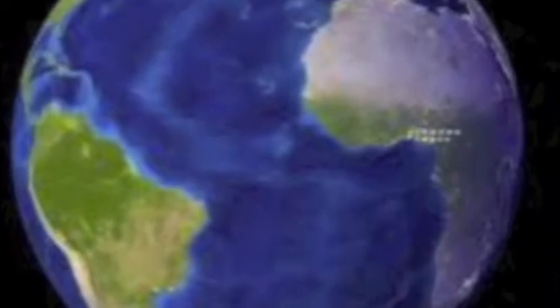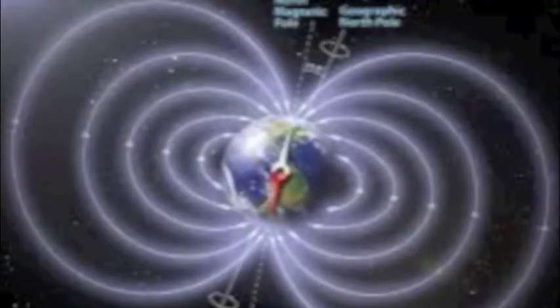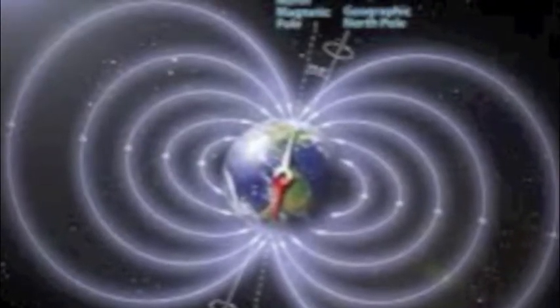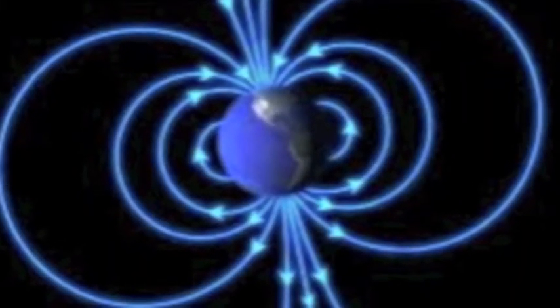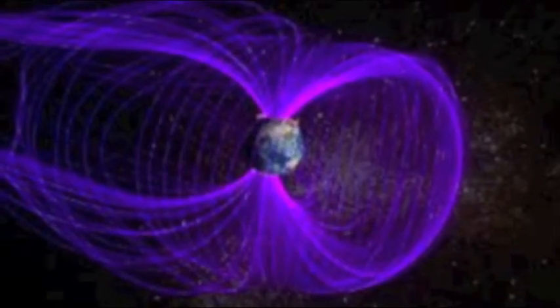The magnetic poles of Earth gradually flip-flop about every 200,000 to 300,000 years.